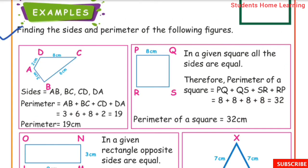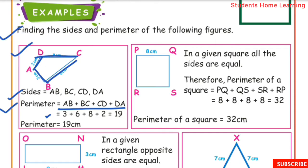Example: finding the sides and perimeter of the following figures. First one — sides are AB, BC, CD, DA. Perimeter equals AB plus BC plus CD plus DA, which is 3 plus 6 plus 8 plus 2. The answer is 19. Perimeter is equal to 19 cm.